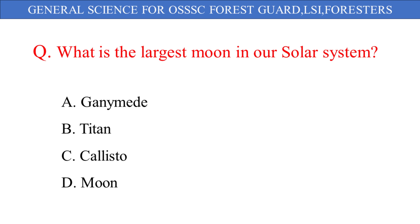What is the largest moon in our solar system? The given options are: A. Ganymede, B. Titan, C. Callisto, D. Moon. And the correct answer is option A: Ganymede.